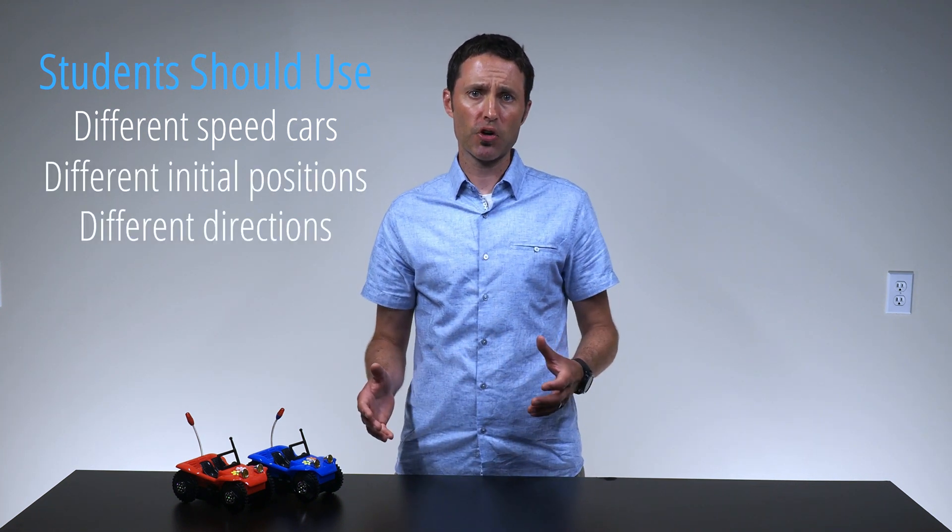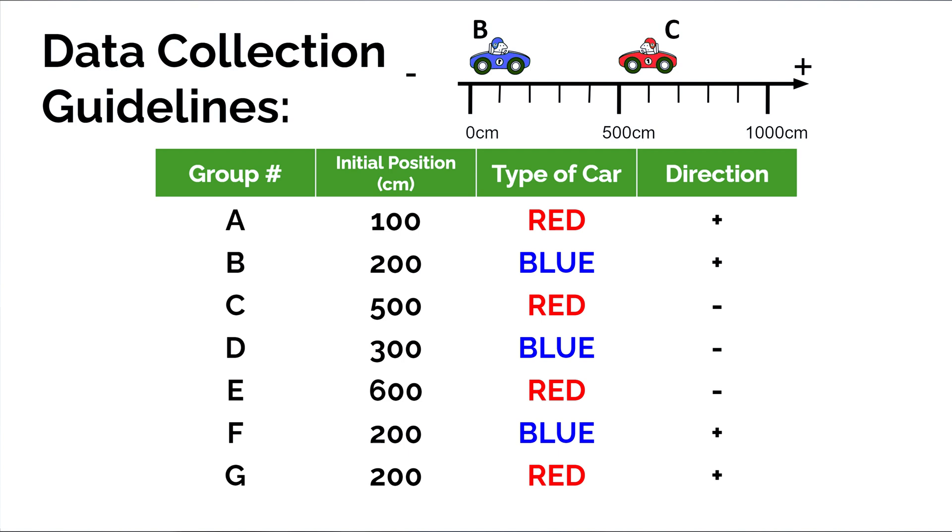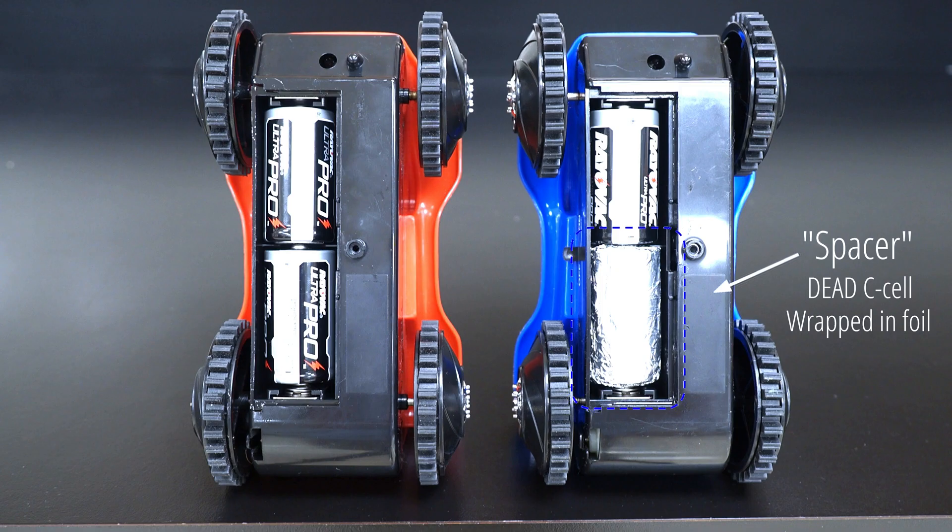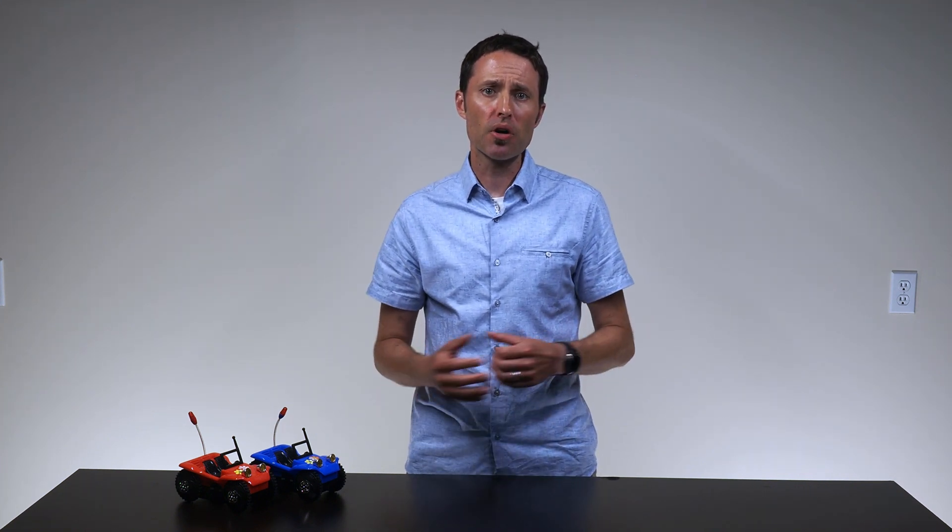It's helpful to pre-assign these guidelines to each lab group. You can make the constant velocity cars move slower by replacing one of the two C-cell batteries with a spacer made out of a dead C-cell battery wrapped in aluminum foil. I find it helpful to make similarly colored cars the same speed. For example, I make the red cars go fast with two C-cells and the blue cars go slow with one battery and one spacer.